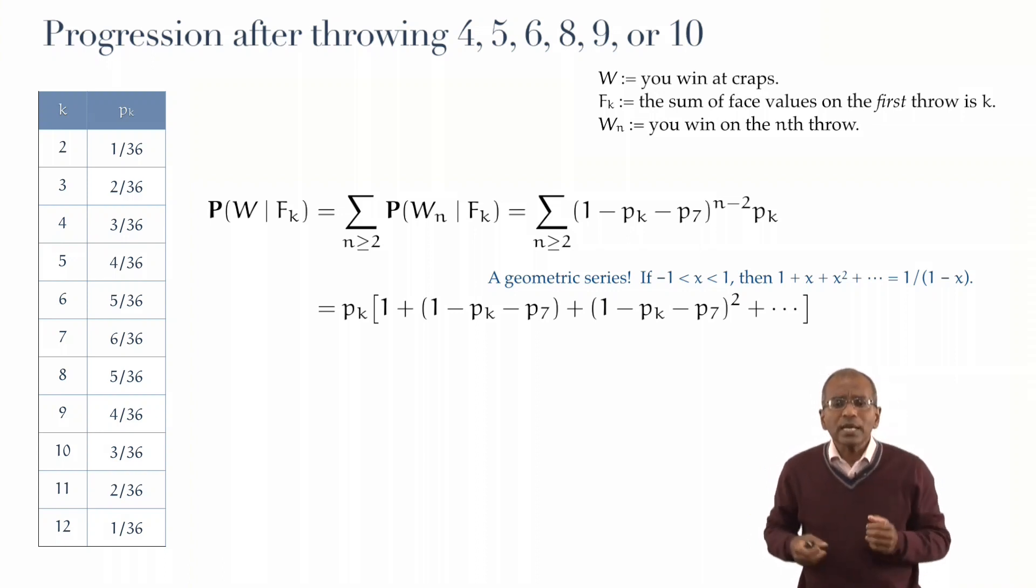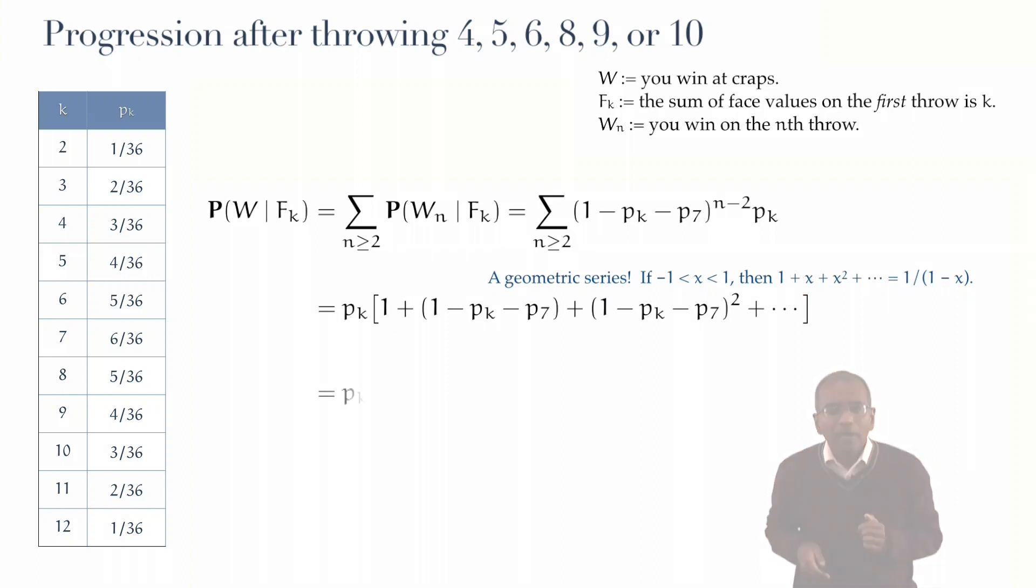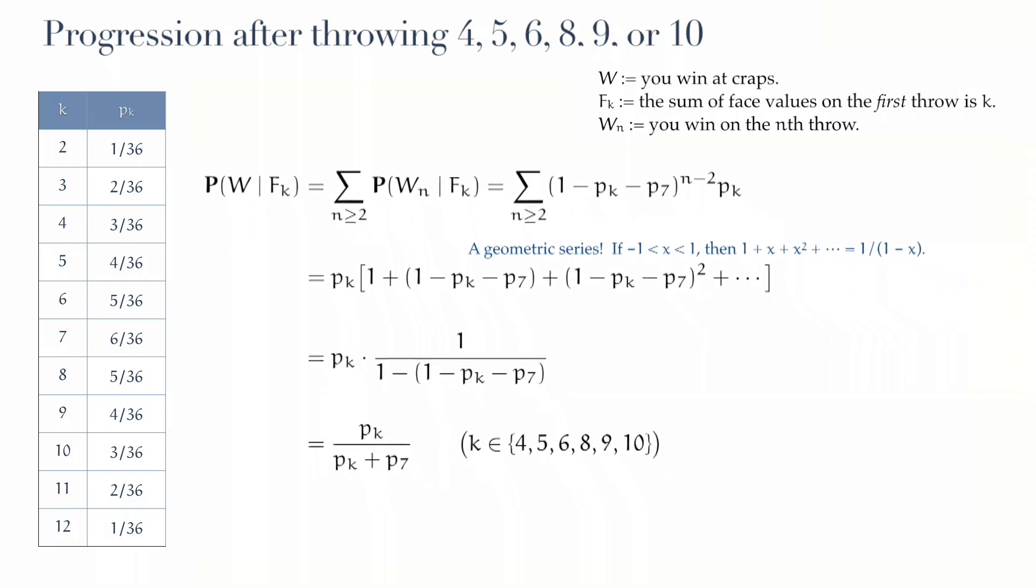We've got a geometric series right here inside the square brackets. Identify the geometric term x with the term 1 minus pk minus p7, and then plug in the geometric series formula, and you get pk, times the reciprocal of 1 minus 1 minus pk minus p7. A little assembly, and it simplifies to a beautiful and elegant expression. We really couldn't have asked for a simpler expression. The probability of winning, eventually, given that you've thrown one of the numbers 4, 5, 6, 8, 9, or 10, given a number k in this range, is given by pk divided by pk plus p7.